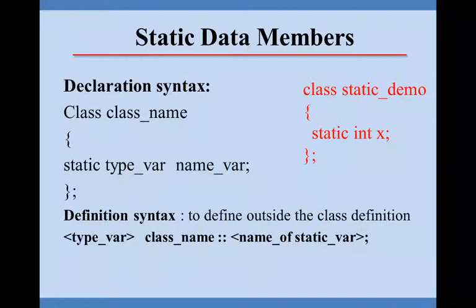Now let us see how to declare it. The declaration syntax is: class, then class name, then a static keyword is used, then a data type and name of a variable and a semicolon. For example, class static demo, static integer x.